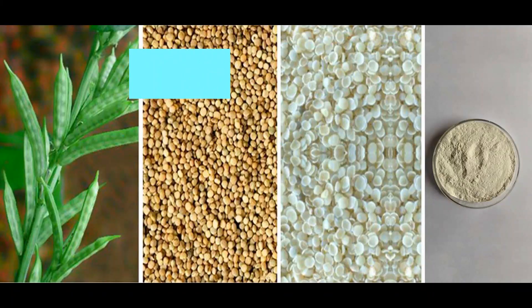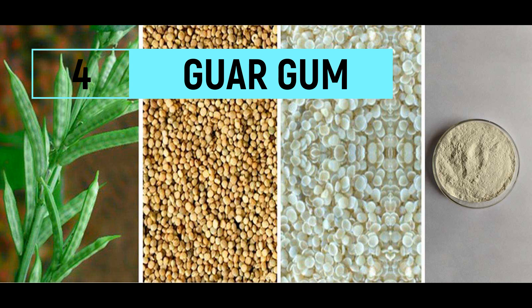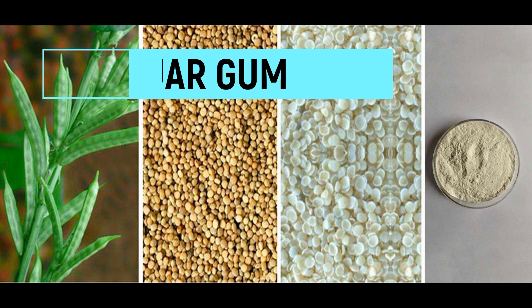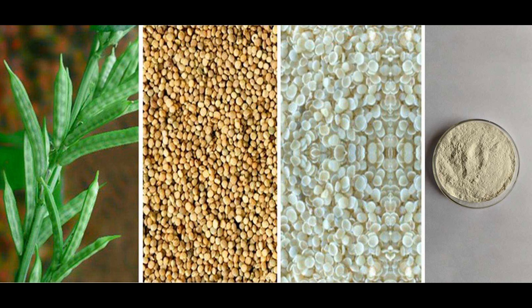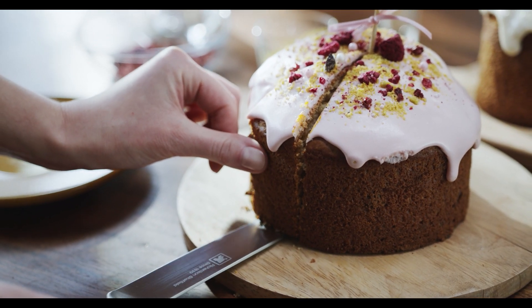Guar gum is derived from guar and is used as a thickener, emulsifier, and stabilizer in bakery products, soups, and sauces.